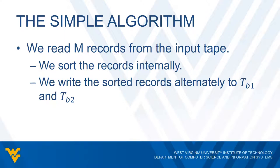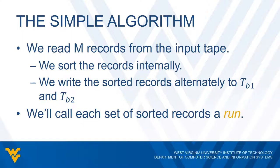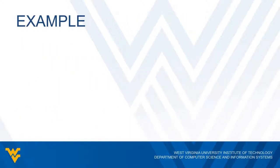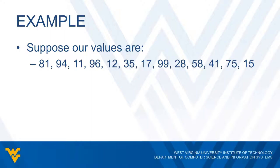After sorting M records in memory, we write the sorted records alternately to TB1 and TB2. The first M records go into TB1, the next M records go into TB2, and so on. Each set of sorted records is called a run. When we're done with all the runs, we rewind all the tapes. For our example, the values are 81, 94, 11, 96, 12, 35, 17, 99, 28, 58, 41, 75, 15 — an unsorted set of data initially placed on TA1.